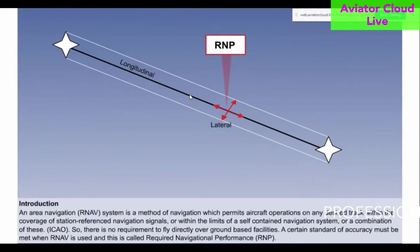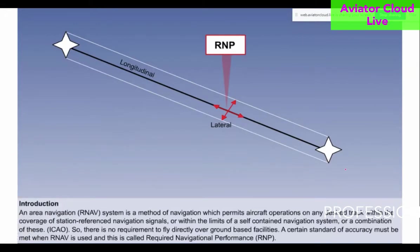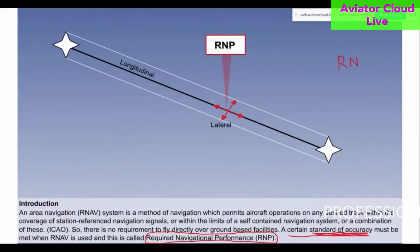A certain standard of accuracy must be met when RNAV is used. There is a certain accuracy that must be met, and that is called Required Navigation Performance, or RNP.